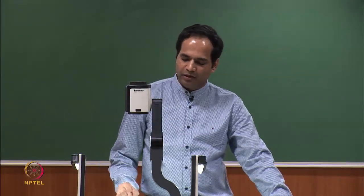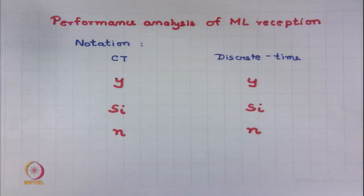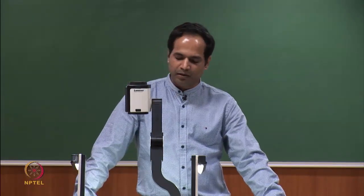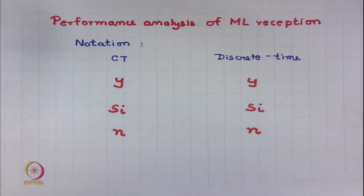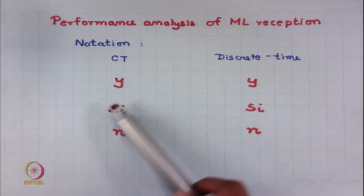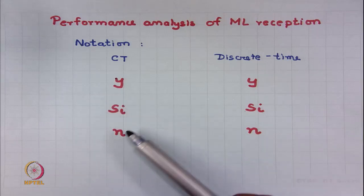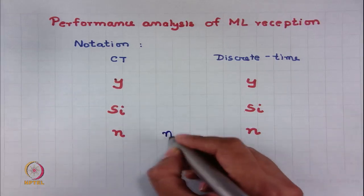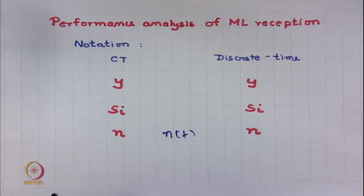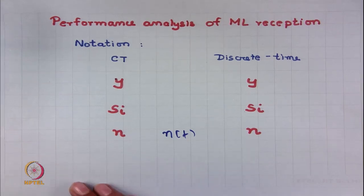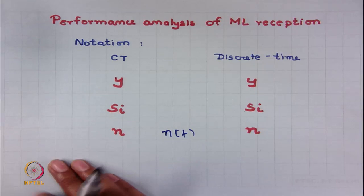We have also established the equivalence between continuous time and discrete time signals. So whether you look into a continuous time signal y(t) or the vector corresponding to that continuous time signal y, or you want to look into the noise as n(t) or think about the noise as vector n, it does not matter. We will use the same symbols for denoting both.